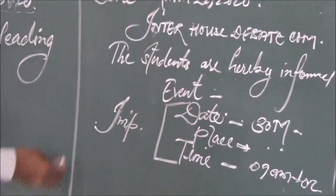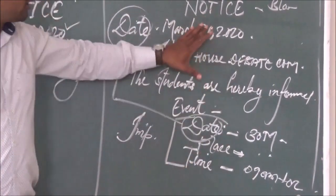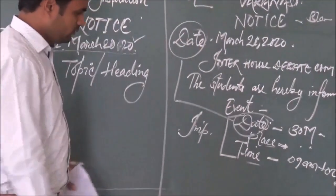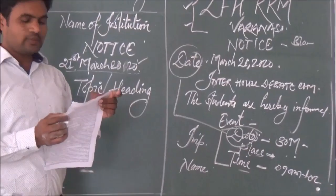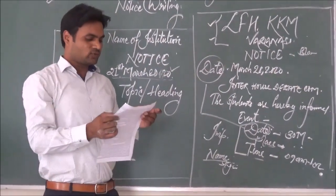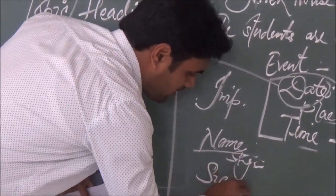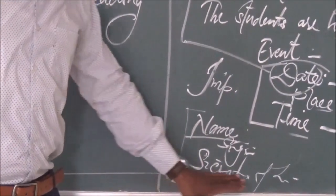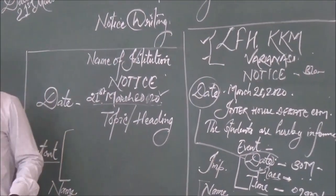One important thing: the date at the top of the notice is when you wrote the notice, while the date mentioned in the content is when the occasion or event is going to take place — so these two dates should be different. The place must also be mentioned. Finally, write the name of the person — if you are Rishabh, write your name, sign there, and write your designation, such as Secretary of the Literary Association.